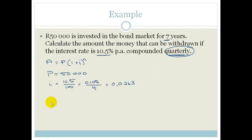Now let's talk about our N. We have seven years, but for each of the years, we're compounding it four times. So we've got seven times by four, which is 28. Now we can substitute this into the formula. So we've got A = 50,000 times (1 + 0.0263)^28.